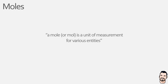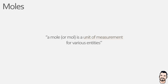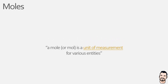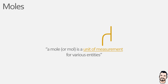First of all, what is a mole? It is technically defined as a unit of measurement for various substances, and there are a few things to unpack here. As a unit of measurement it functions in a similar way to some other more well-known units. For example, how many units are in a pair? The answer is 2. What about a dozen? The answer is 12.